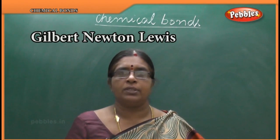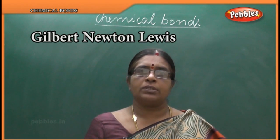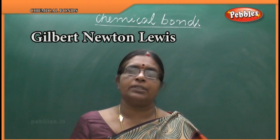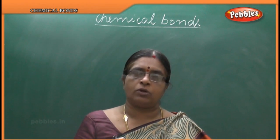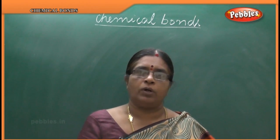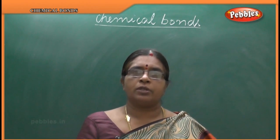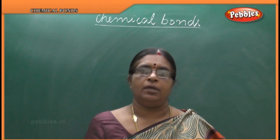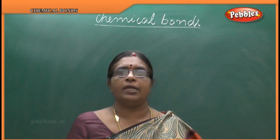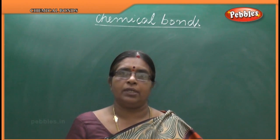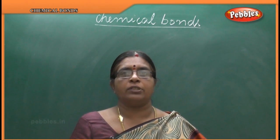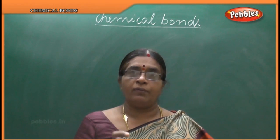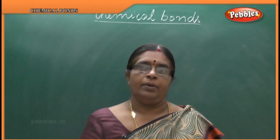G.N. Lewis was a scientist who was thinking about why all these atoms and compounds should form bonds. So, he did research on electronic configuration. What is electronic configuration? Electrons are present in the atom, and the way the number of electrons are arranged in an atom is called electronic configuration.